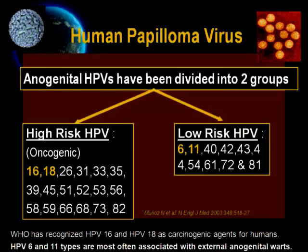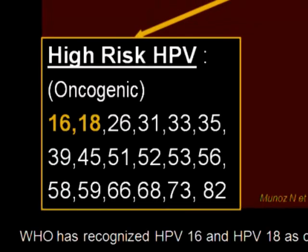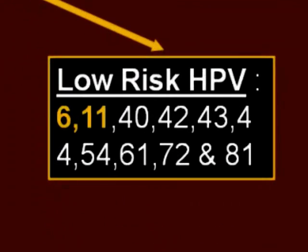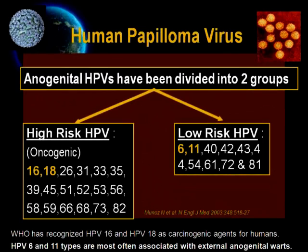Human Papilloma Viruses are divided into two groups. Number one is high-risk HPV — for example, HPV types 16, 18, 26, 31, 33, and others. Number two is low-risk HPV — for example, HPV types 6, 11, 40, 42, and others. High-risk HPV are oncogenic viruses associated with epithelial cancers such as cervical, vaginal, penile, and anal cancer. WHO has recognized HPV types 16 and 18 as carcinogenic agents for humans. Low-risk HPV are associated with external anogenital warts; more than 90% of anogenital warts are due to low-risk HPV types 6 and 11.